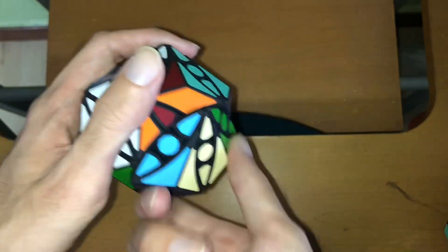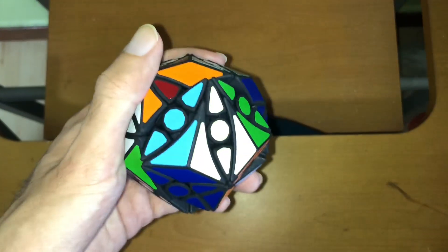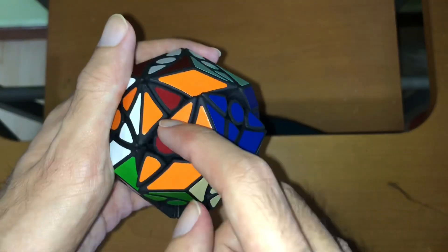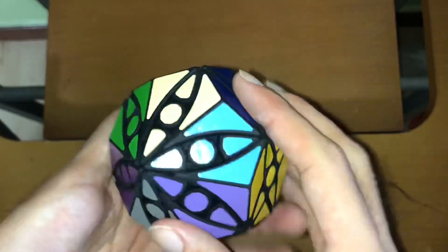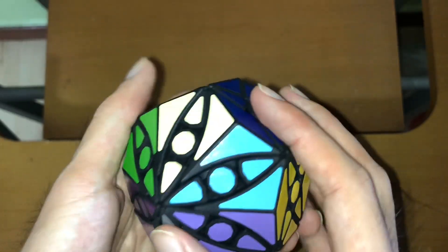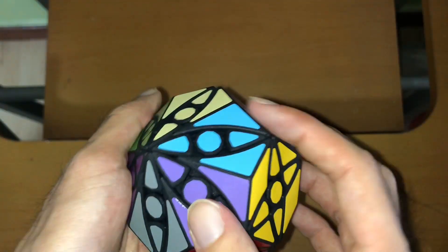In fact, I think this puzzle actually turns better than the original version because there's probably less friction between the pieces because of all the material that has been removed. You can even kind of finger trick it but the angles are kind of shallow so you might slip off.